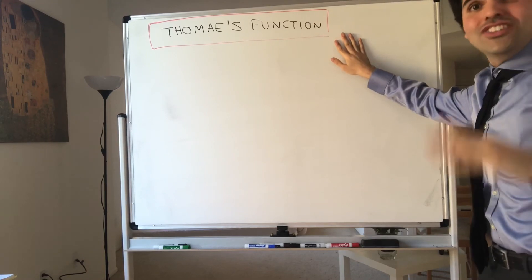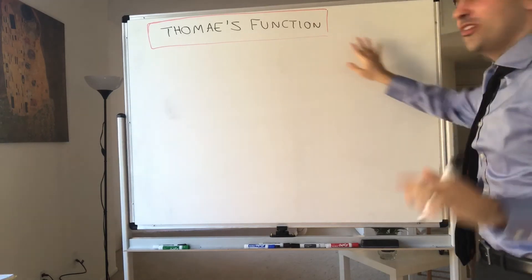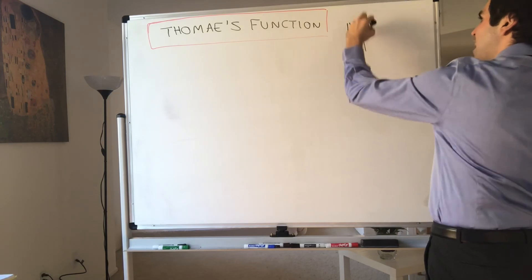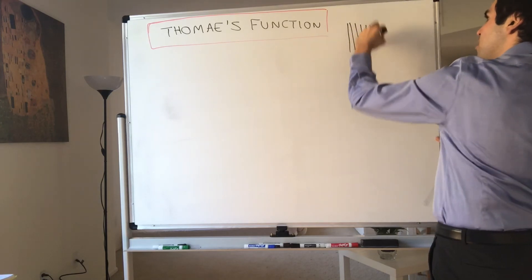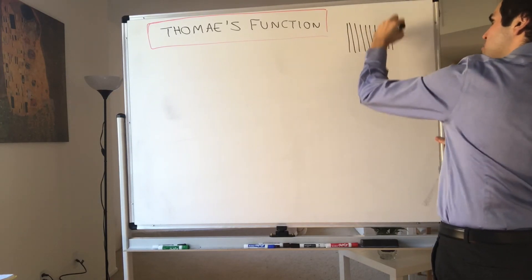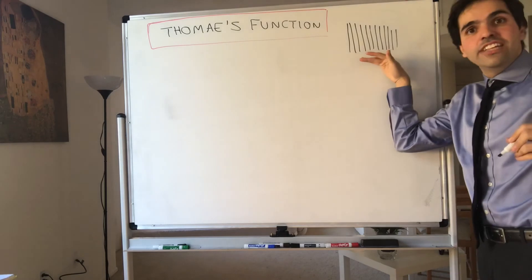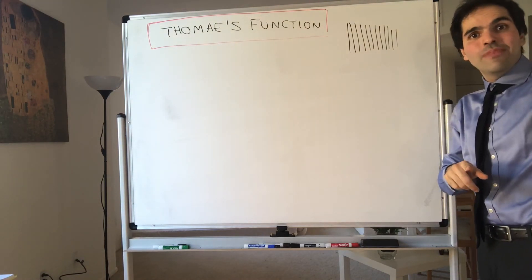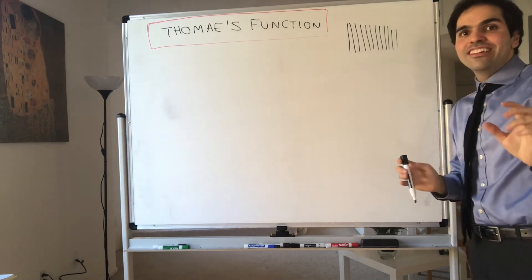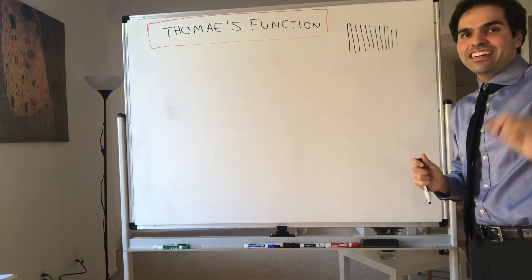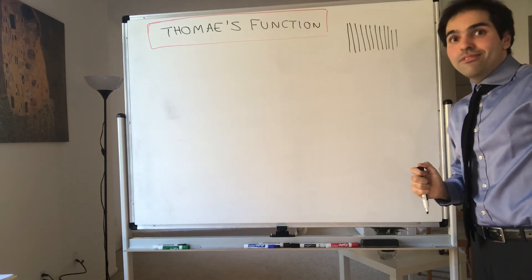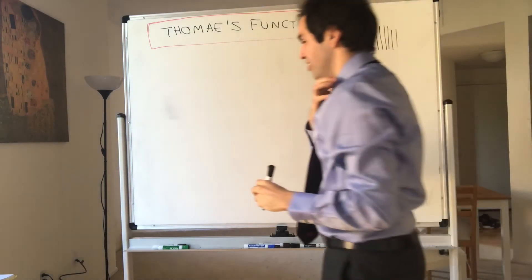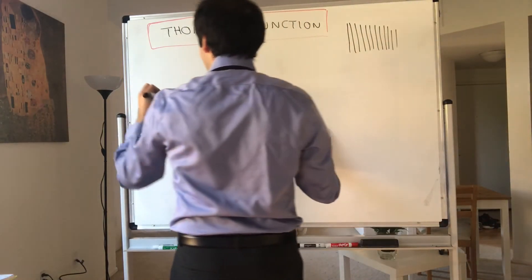I want to emphasize this function is super crazy, because there is of course a function that's zero at every rational number and one at every irrational number — that one is discontinuous everywhere. But the function we'll talk about is continuous at the irrational numbers but discontinuous at the rational numbers, and it's defined as follows.